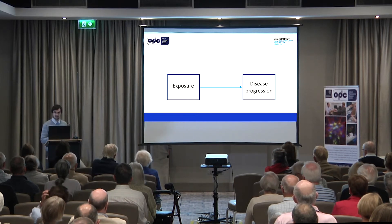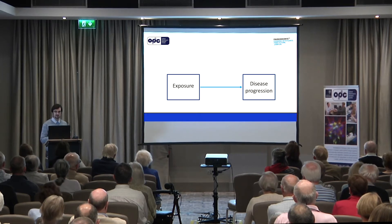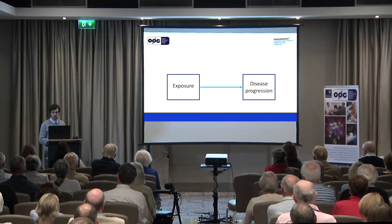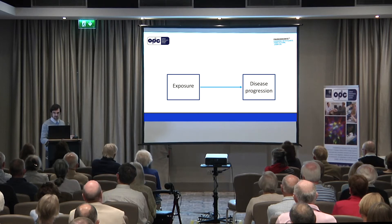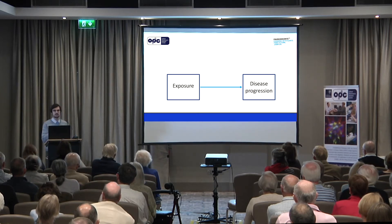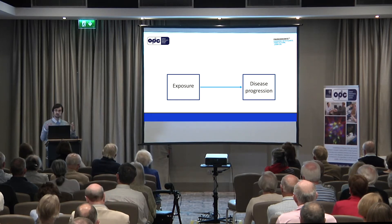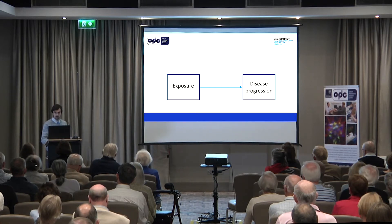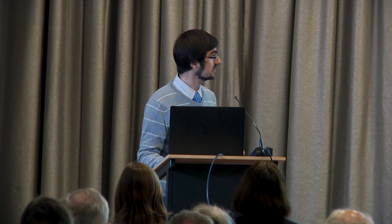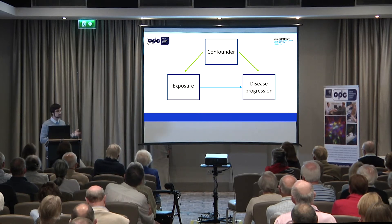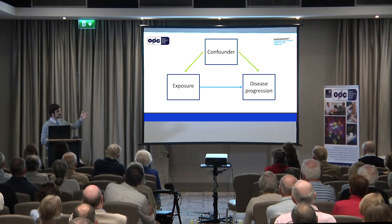This is a schematic of what we're trying to do. We're trying to determine whether a certain exposure is related to disease progression. This exposure might be another disease, for instance type 2 diabetes, or it could be a blood biomarker like uric acid, or a lifestyle choice, something like smoking — anything that we think might predict disease progression. Disease progression could be something like the rate of change in one of the questionnaires you're filling out when you come to the clinic, or something like time to developing dementia. The problem in an observational cohort like the Discovery study is we're often uncertain whether an association between the exposure and disease progression is due to some confounder which causes both.